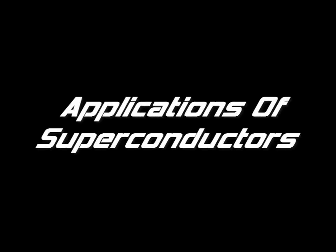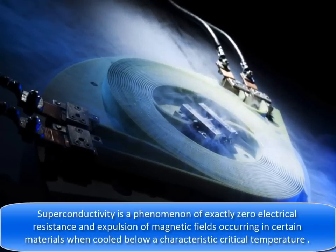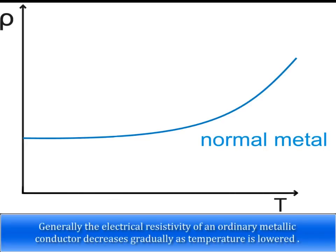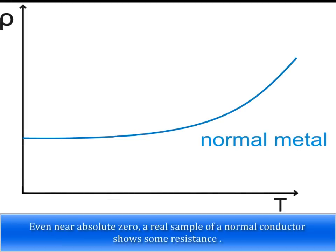Superconductivity is a phenomenon of exactly zero electrical resistance and expulsion of magnetic fields occurring in certain materials when cooled below a characteristic critical temperature. Generally, the electrical resistivity of an ordinary metallic conductor decreases gradually as temperature is lowered. Even near absolute zero, a real sample of a normal conductor shows some resistance.